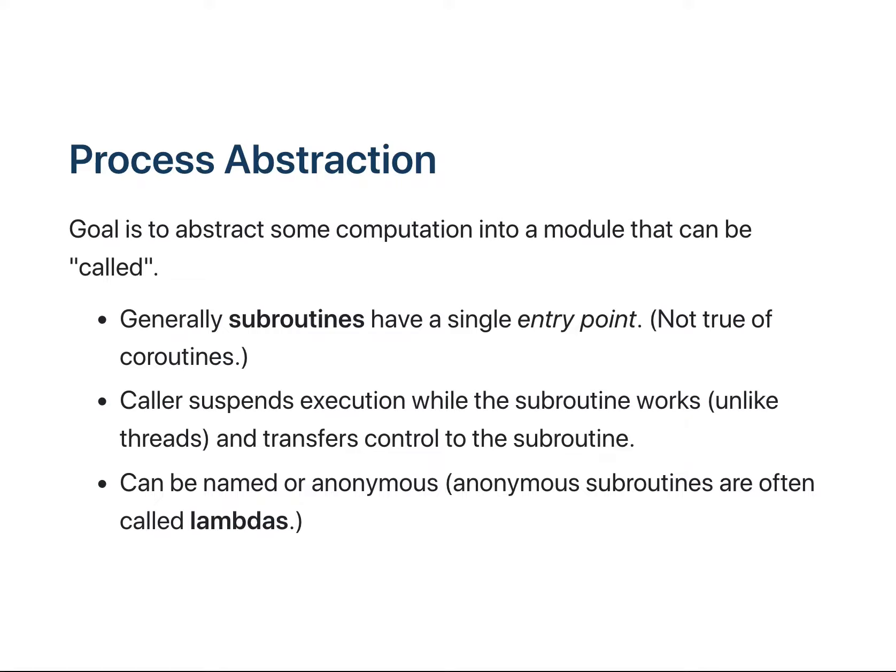Subroutines can be either named or, as we've seen using lambdas in Haskell when we pass a lambda to the map or filter function, they can be anonymous as well. So this process abstraction is generally named, but can be anonymous.